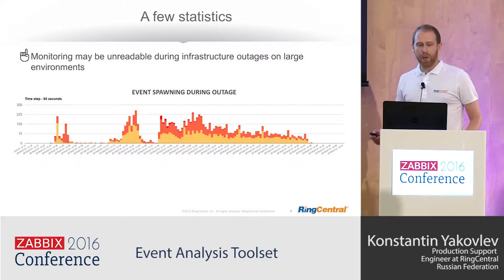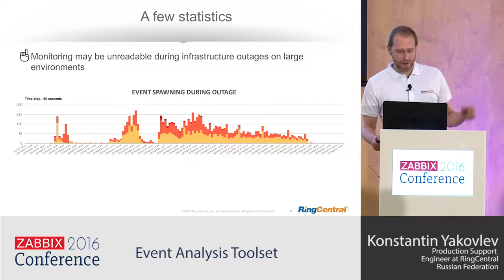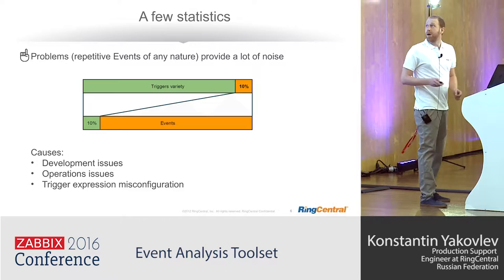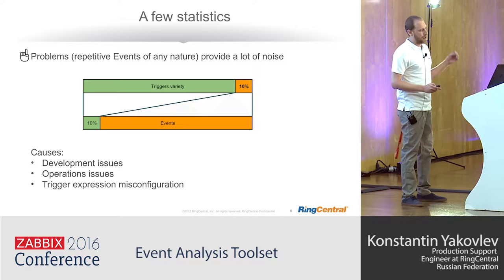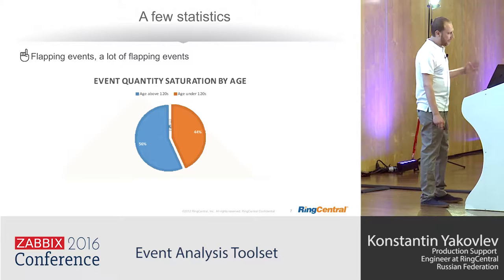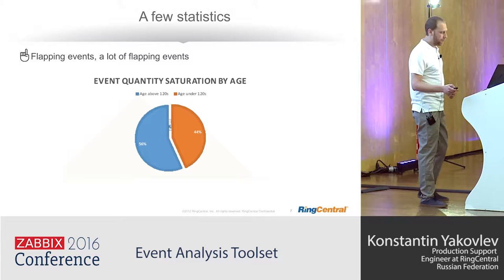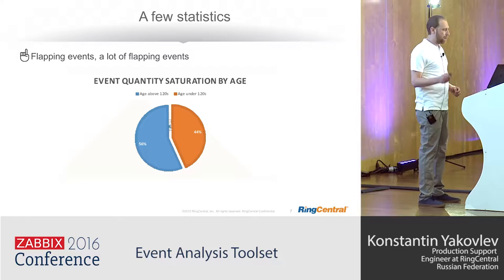I believe quite all engineers here are familiar with any kind of repetitive events — we call them problems. Dependent on environment complexity, up to 90% of events may be produced by only 10% of trigger variety. Problems have a rotation due to their causes being fixed. Another really annoying thing in any monitoring system is flapping. Depending on environment, you may have a really high percentage of events with age below two minutes. Flapping events are below the free-cognition threshold for the operator, and an issue may be treated as resolved when a flapping event clears — but that's not always true.